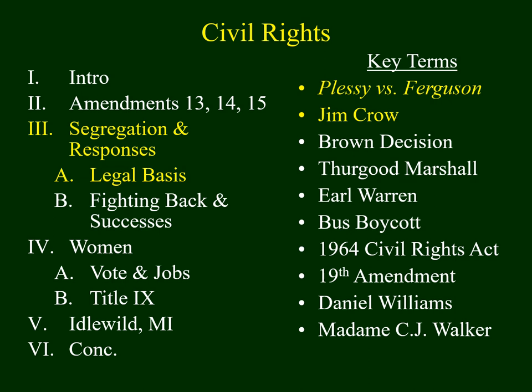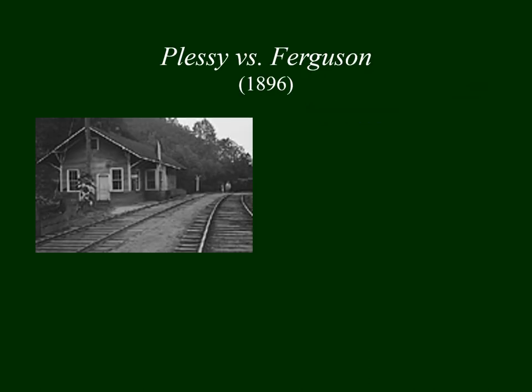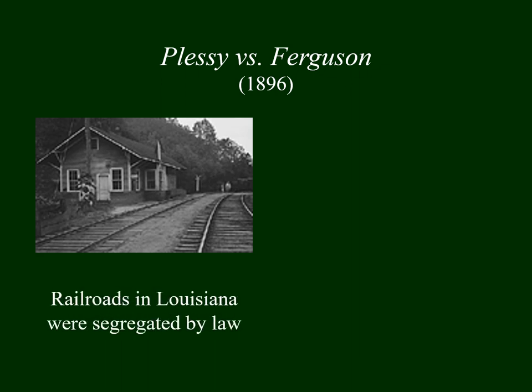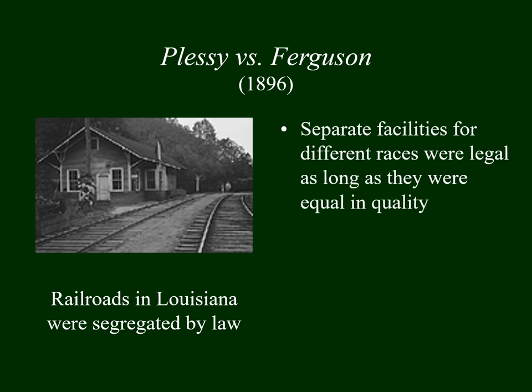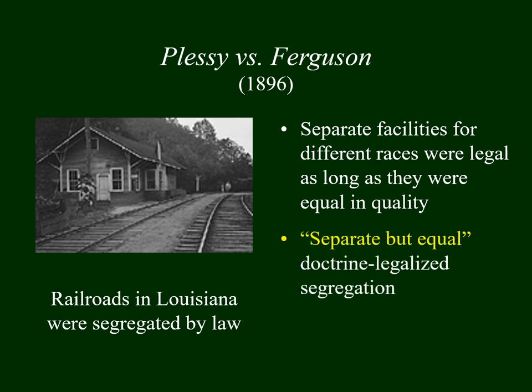I'd like to explore the legal basis for segregation. Segregation based on race was confirmed by a Supreme Court decision in the 1890s called Plessy versus Ferguson. This dealt with the law in Louisiana where all railroad cars were segregated by law. The Supreme Court declared that separate facilities for people of different races were legal as long as they were equal in quality. This gave us the so-called separate but equal doctrine.